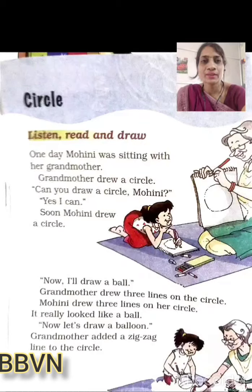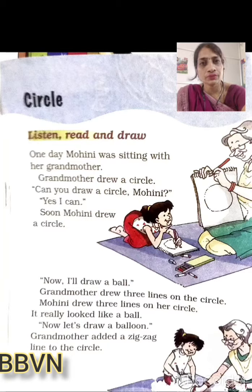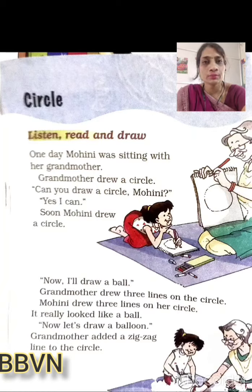Hello kids and welcome to English class. Today we are going to read a chapter from the Marigold book, page number 56 and 57. So everyone open your book to page number 56 and 57. We are going to read a new chapter. The name of the chapter is Circle.